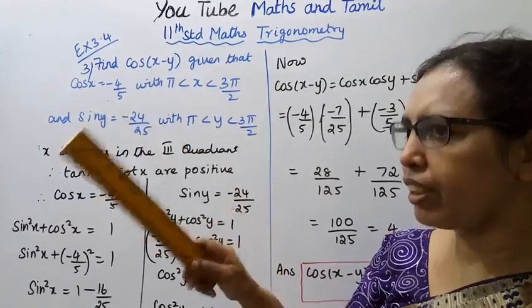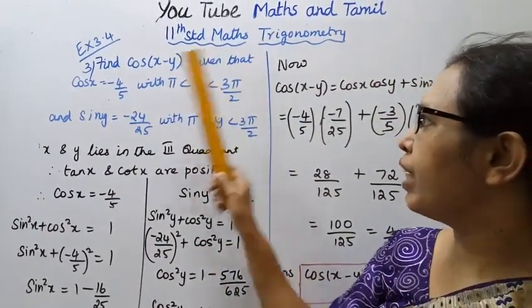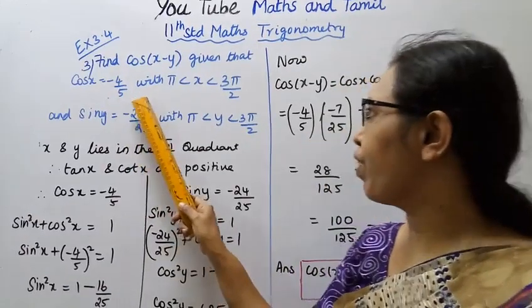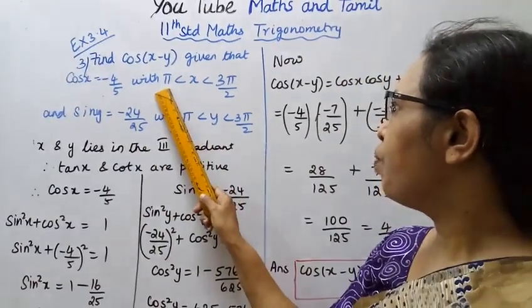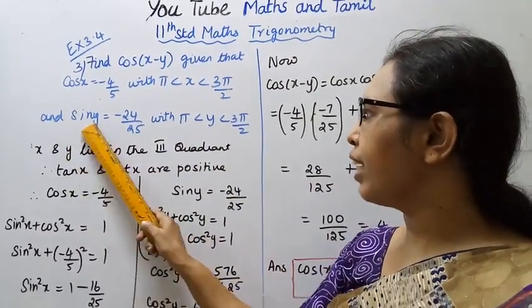Given that cos x equals minus 4 by 5 with x lies between π to 3π by 2, that is 180 to 270 degrees. And sin y equals minus 24 by 25 with y lies between 180 to 270 degrees.